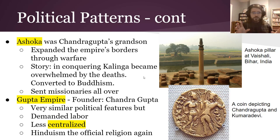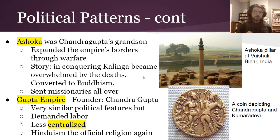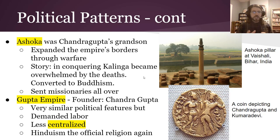About 500 years later, the Gupta Empire — founded by a ruler who clearly wanted to sound similar to the previous dynasty — had very similar political features, but also demanded specific yearly labor from people in the empire. They were less centralized and didn't have direct control over surrounding rulers, but those rulers at least paid homage to this emperor. And they made Hinduism the official religion again, so Hinduism came to dominate the Indian subcontinent.